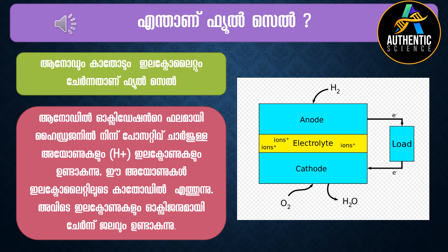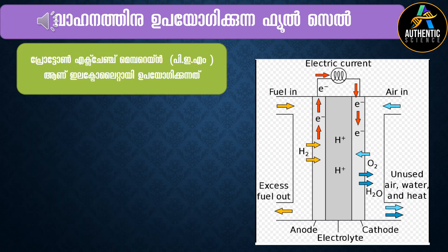The anode is where the oxidative charge of hydrogen occurs. These are positive charges of hydrogen. H plus — hydrogen loses an electron. This hydrogen passes through the electrolyte to the cathode, where it meets oxygen.